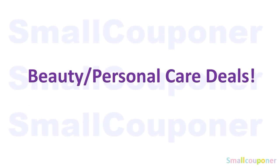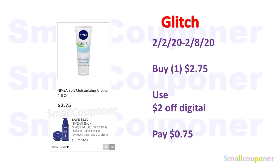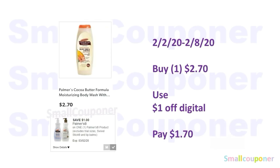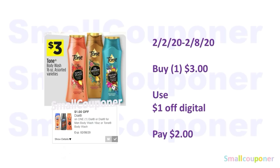Beauty and personal care deals. This is also a glitch deal for the Nivea cream, the 2.6 ounces. These are $2.75; use the $2 off digital and pay $0.75. The Palmer's Body Wash is $2.70; use the $1 off digital and pay $1.70. The Tone Body Wash is $3; use the $1 off digital and pay $2.